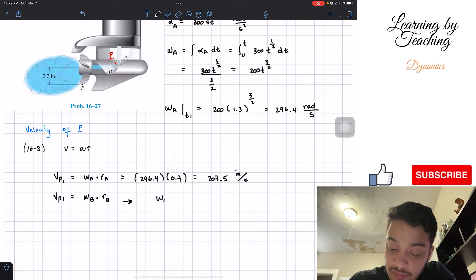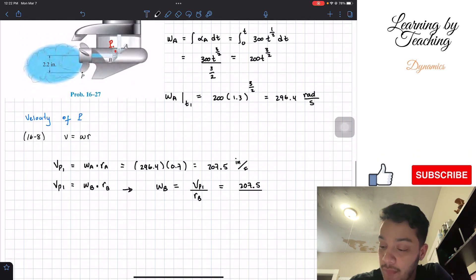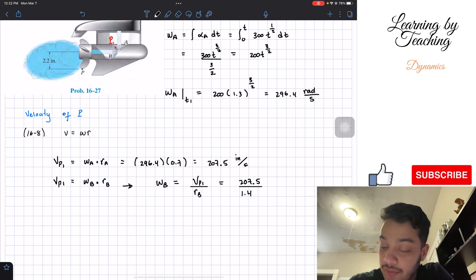Now, from our second equation, we're going to solve for the angular velocity of B, which we are interested in. It's going to be the velocity of the point divided by the radius of B. And if we plug the numbers, it's going to be 207.5 divided by the radius of B, which is 1.4.